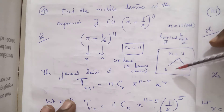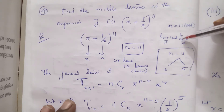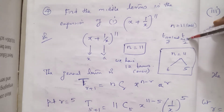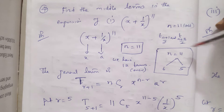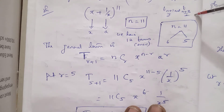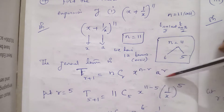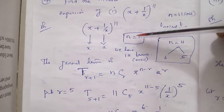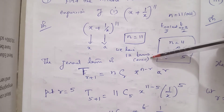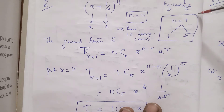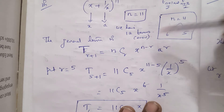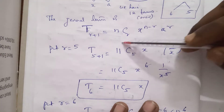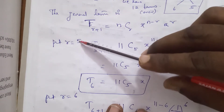With n = 11, the two middle terms are T(11+1)/2 = T6 and T(11+3)/2 = T7. So we need to compute two middle terms. Using the general term formula T(r+1) = nCr · x^(n-r) · a^r, we take r = 5 and r = 6.